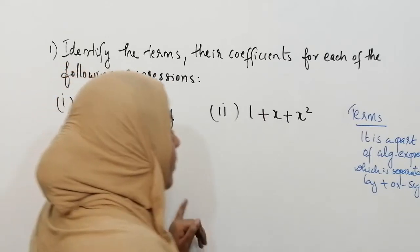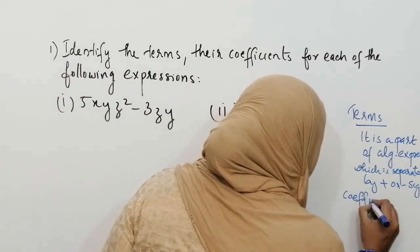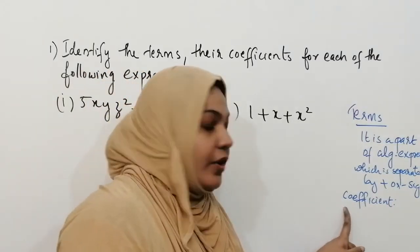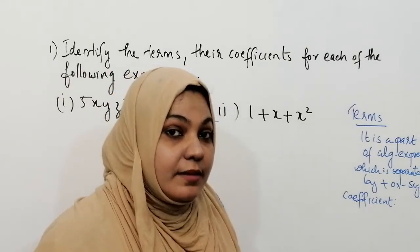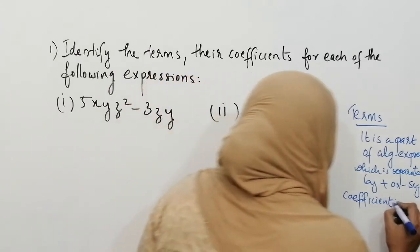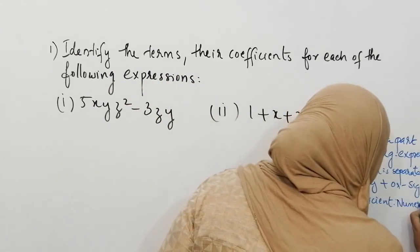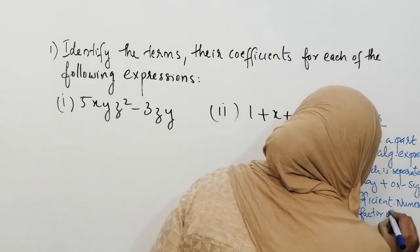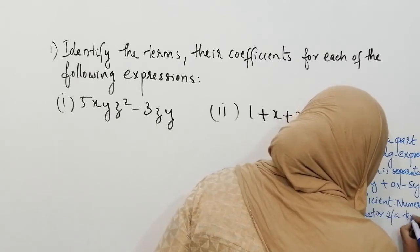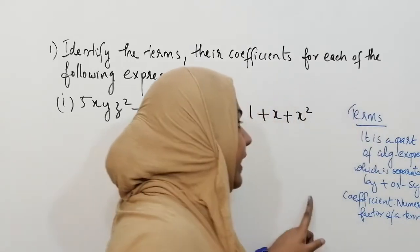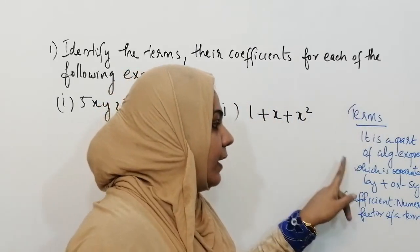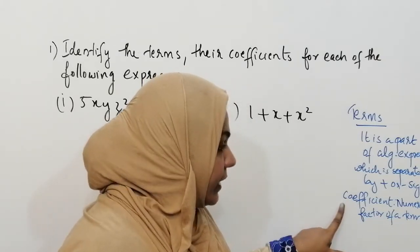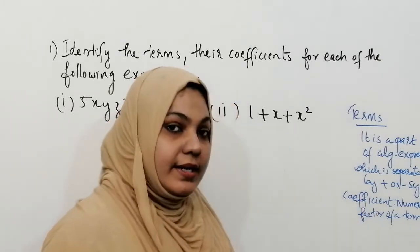Next we have to learn what is coefficient. What is coefficient? The numerical factor of a term is called coefficient. Again: terms means a part of an algebraic expression which is separated by plus or minus sign. Coefficient means it is a numerical factor of a term.